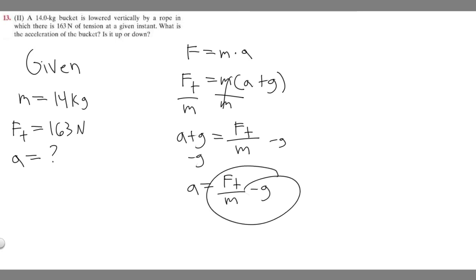Now we have it in this form and we have all these variables. Keep in mind that g is just gravity, which we know on Earth is 9.8 meters per second squared. So if we plug everything in, we get a equals the tension force, 163 newtons, over the mass, 14 kg, and then we're subtracting gravity, 9.8 meters per second squared.